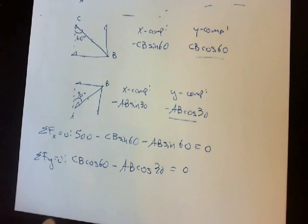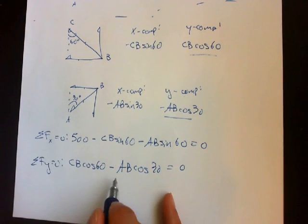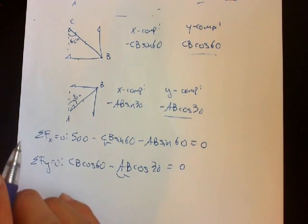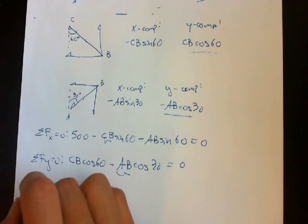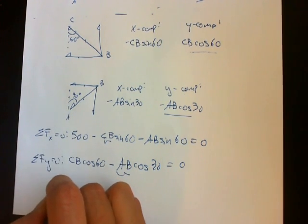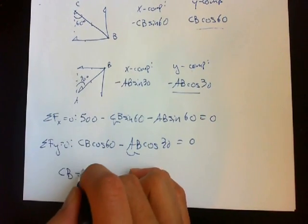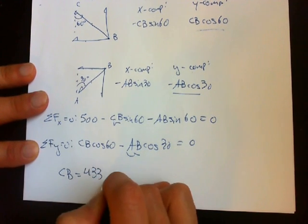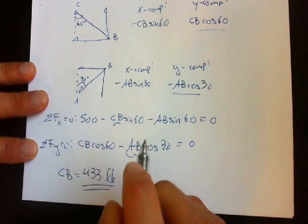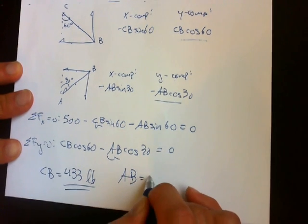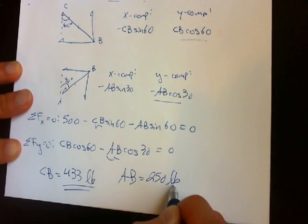In this case, you have two variables and two equations. To solve for AB and BC, you would use algebra. If you do it correctly, CB equals 433 pounds and AB equals 250 pounds.